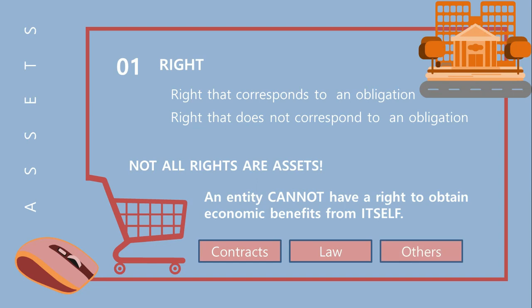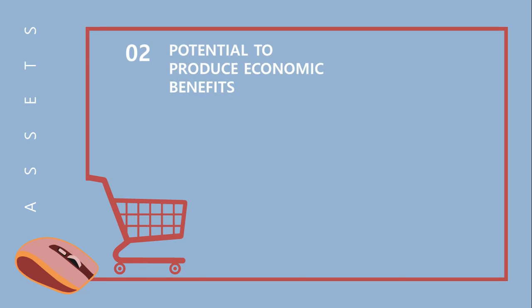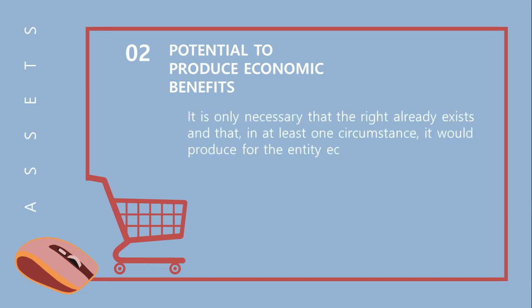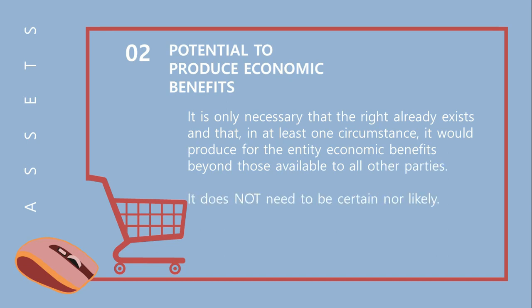Let us now talk about the potential to produce economic benefits. A very important term in this phrase is the word 'potential.' This means that for the potential to exist, it does not have to be certain nor even likely. According to the framework, it is only necessary that the right already exists and that in at least one circumstance it would produce for the entity economic benefits beyond those available to other parties. These economic benefits can come in many forms, such as the right to receive cash from collections receivable, from sale of inventories, or from rental payments from leasing property.